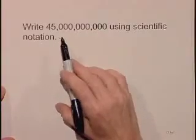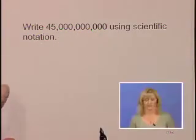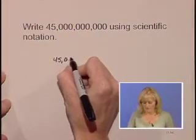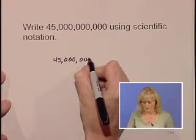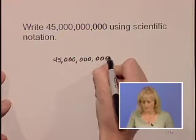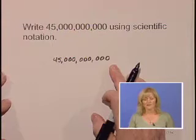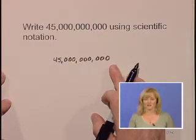Let's write 45 billion using scientific notation. From our original value, we're going to move the decimal place to the left until it's immediately to the right of the first non-zero digit.